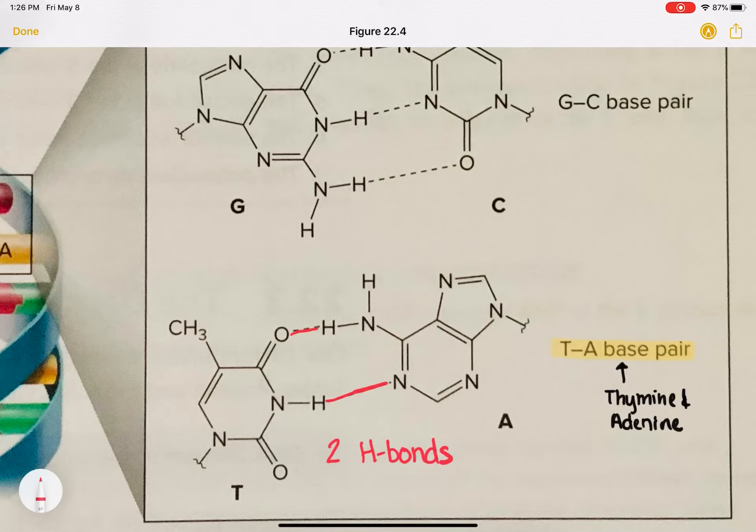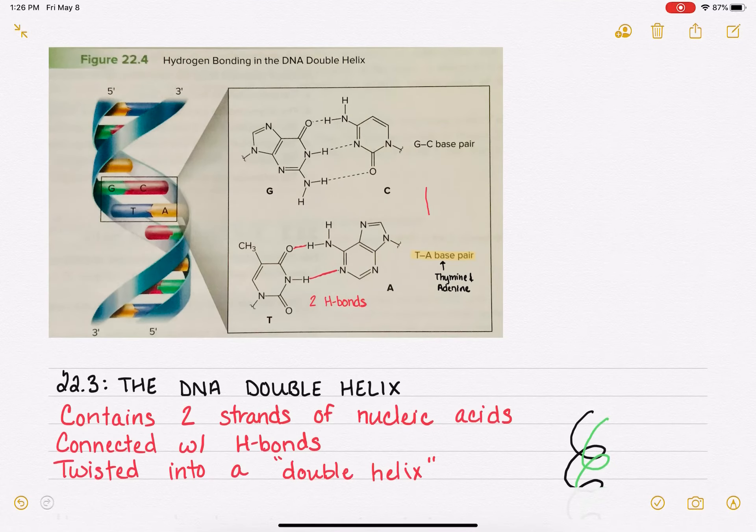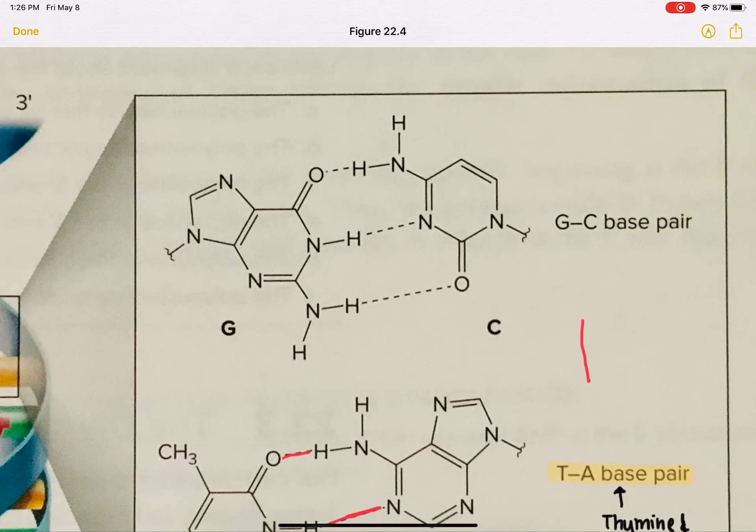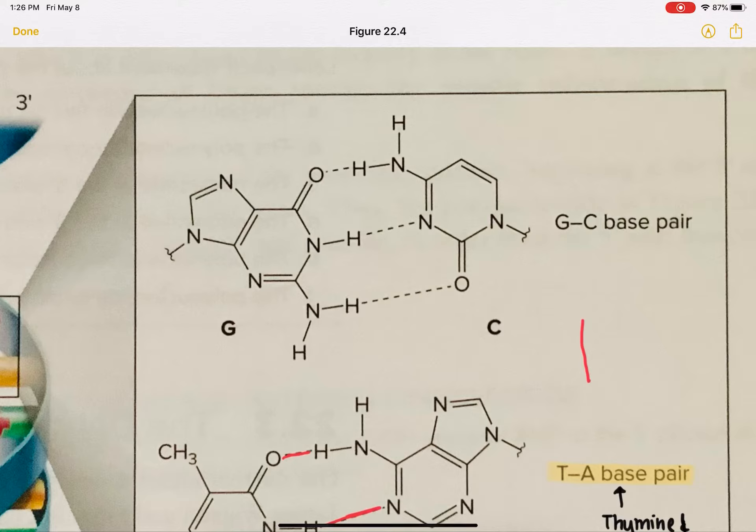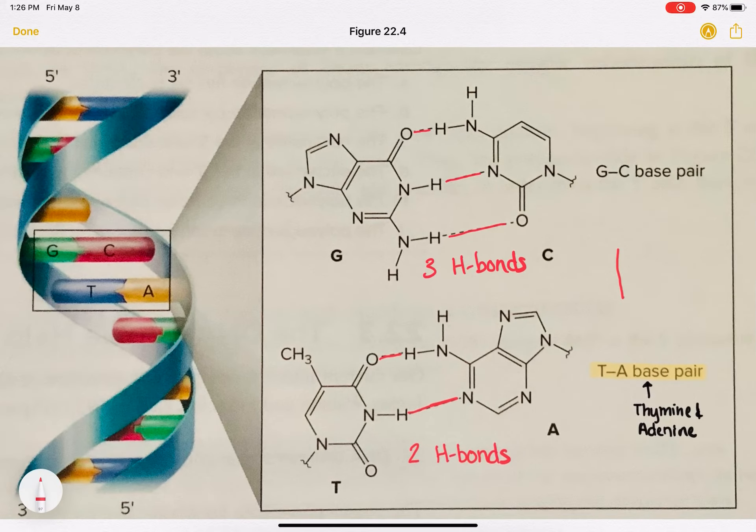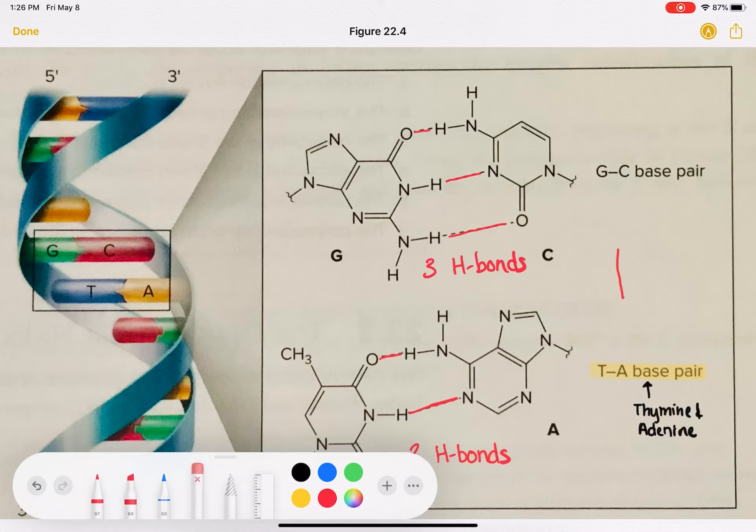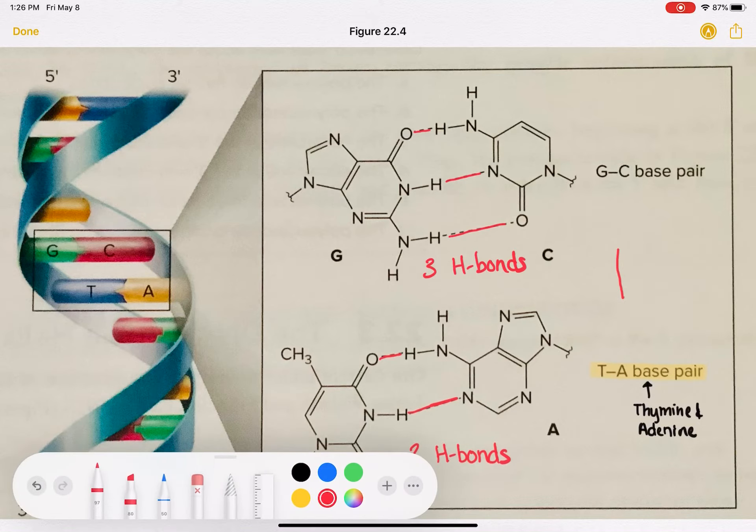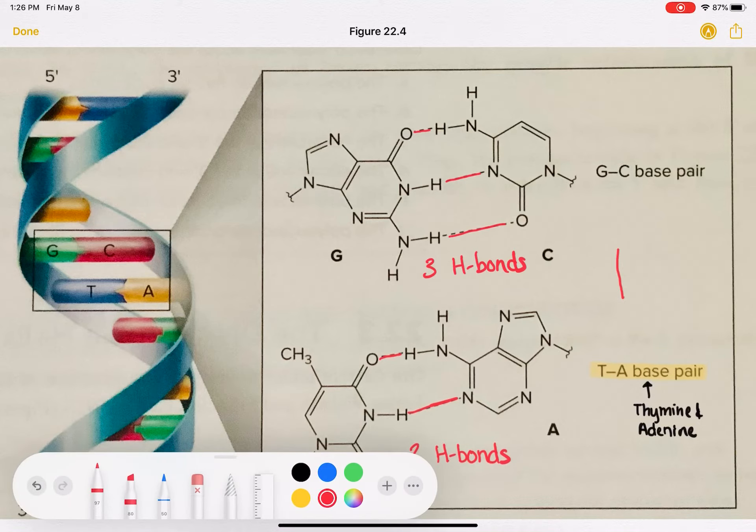For guanine and cytosine up here, the hydrogen bonding that holds these two together, there's three of them that exist right here. There's three hydrogen bonds. Notice that for both of these pairs, guanine and cytosine, as well as adenine and thymine, there's one purine and there's one pyrimidine that are holding them together. So you have one large base and one smaller base. And that pairing is necessary to maintain a consistent distance between the two strands in DNA.